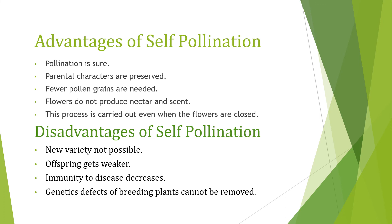Disadvantages of self-pollination: New species and varieties of plants are not produced. Since there is no mixing of genes, no new characters are introduced into the offspring. The offspring are much weaker, and immunity to disease also decreases. Continuous self-pollination results in the production of weaker progeny. Genetic defects of the breeding plants cannot be removed in the case of self-pollination.